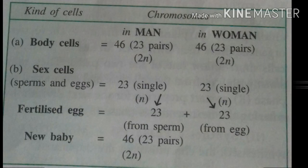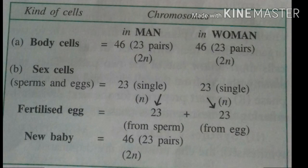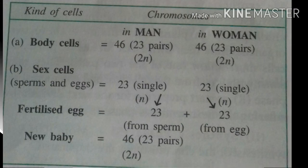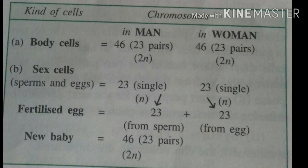In the case of a man, body cells contain 46, meaning 23 pairs of chromosomes, that is 2N. In the case of women also, body cells have 46 or 23 pairs of chromosomes, that is 2N. While in sex cells — sperm and egg — men contain 23 single chromosomes, that is N, in sperm, and in women, 23 single, that is N, chromosomes in egg.